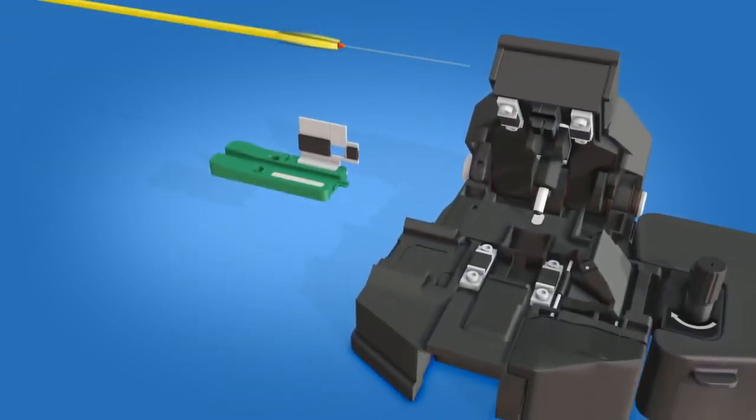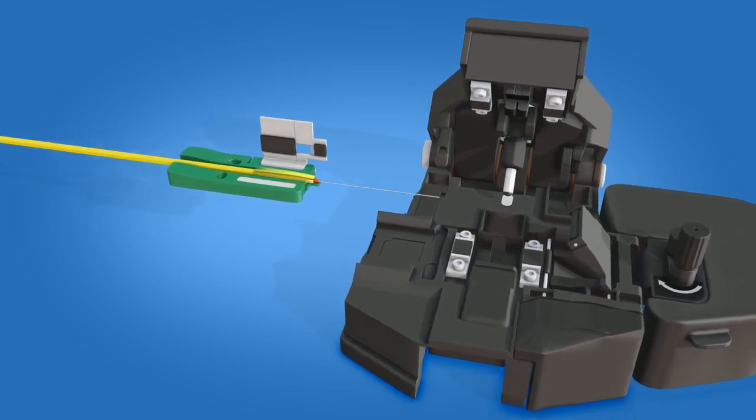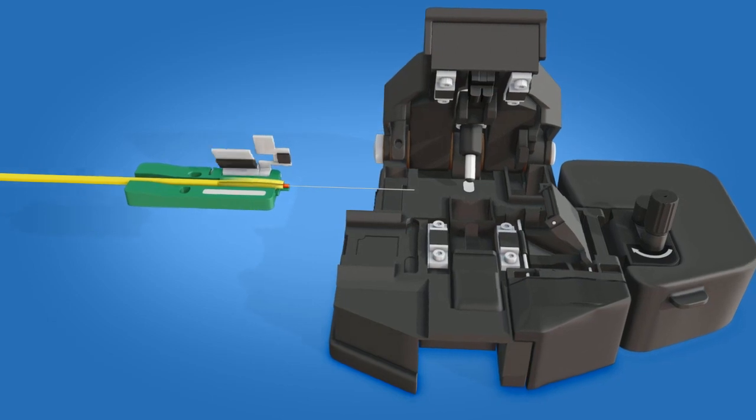Place the fiber into the three millimeter fiber holder with the end of the 900 micron coating at the end of the fiber holder. Close the fiber holder clamp.